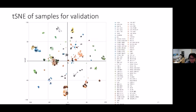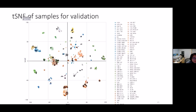A t-SNE clustering of our analyzed cases against the DKFZ reference dataset shows reference cases colored according to respective methylation classes, and our validation cases shown as dots with black circles. Our validation cases cluster well with CNS tumor methylation classes of the reference cohort with very distinctive clusters.